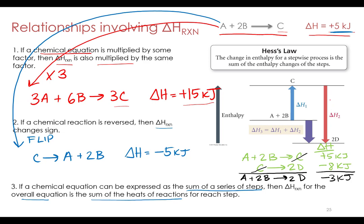This is shown pictorially on an energy plot. The potential energy of A plus 2B starts at one level, then goes up to C — an increase of 5 kilojoules. Then C goes to 2D, which drops in potential energy by 8 kilojoules. The overall difference in enthalpy between 2D and A plus 2B is the sum of those two values, giving negative 3 kilojoules — all without having to measure it directly in the lab.